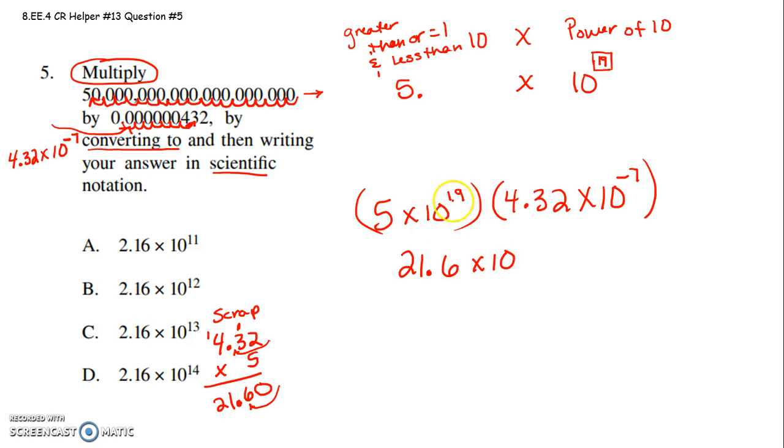So this is 21.6 times 10 to the, well what do we do with exponents when we have the same base and we're multiplying? We add those exponents. So that's 19 plus negative 7, which is 21.6 times 10 to the 12th.